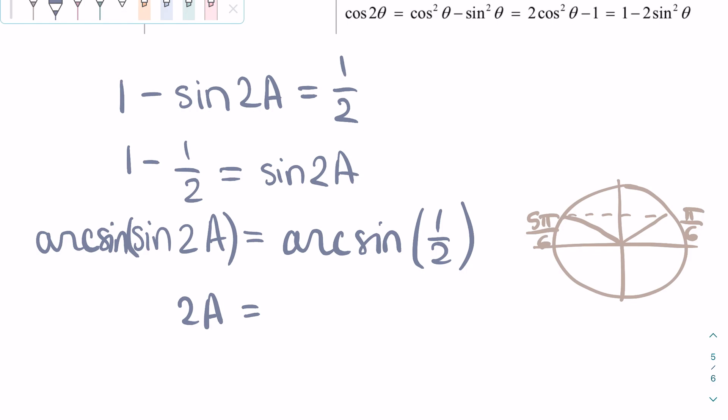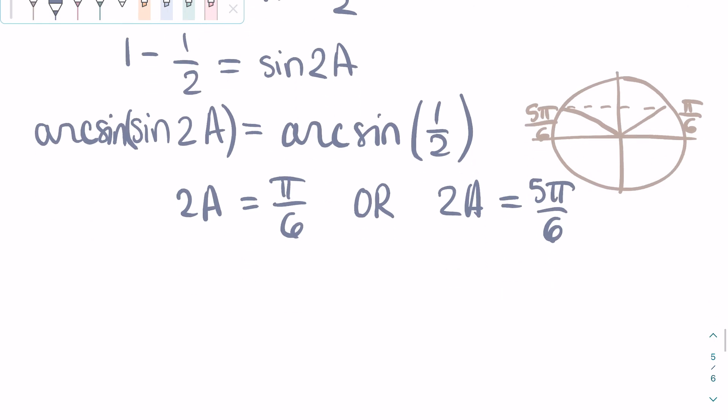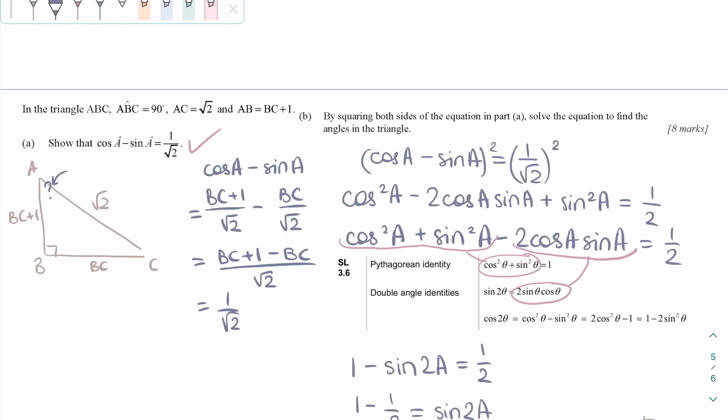It is Pi over 6 and 5 Pi over 6, so do not forget to include both of them when you're solving this. Then we can just divide both sides by 2 to get A, and we get A can be equal to Pi over 12 or 5 Pi over 12.